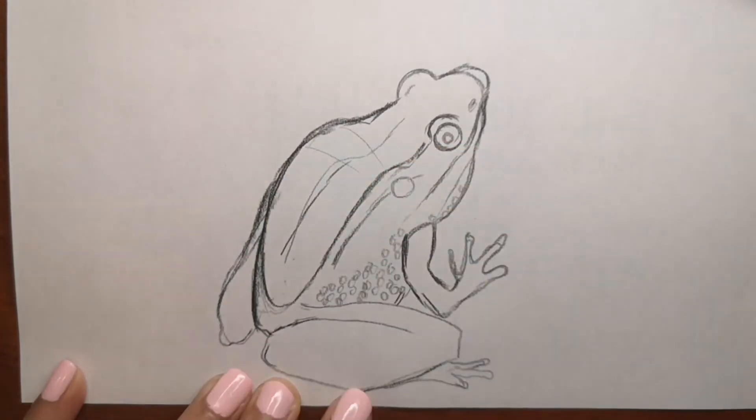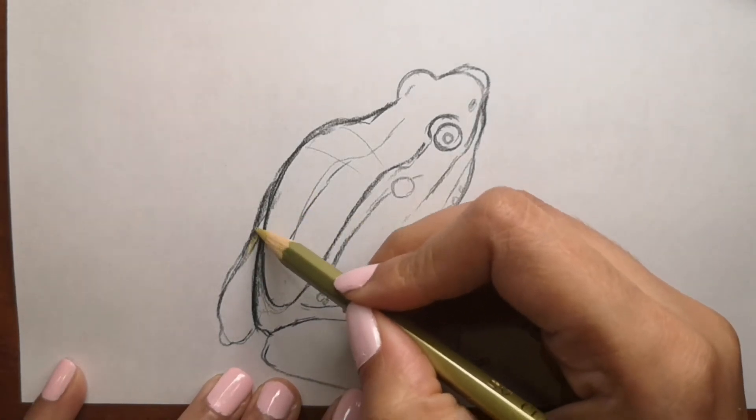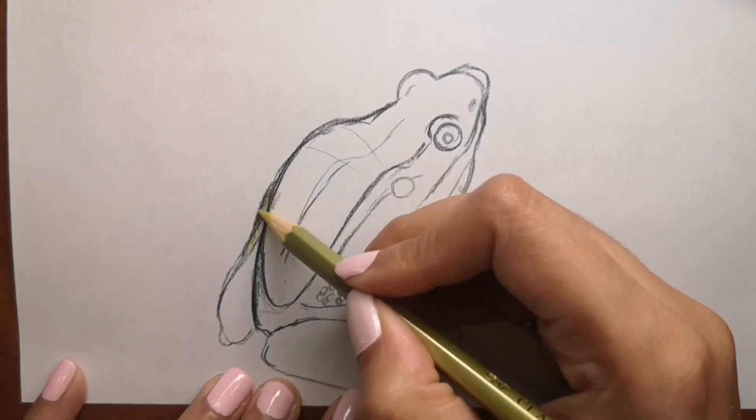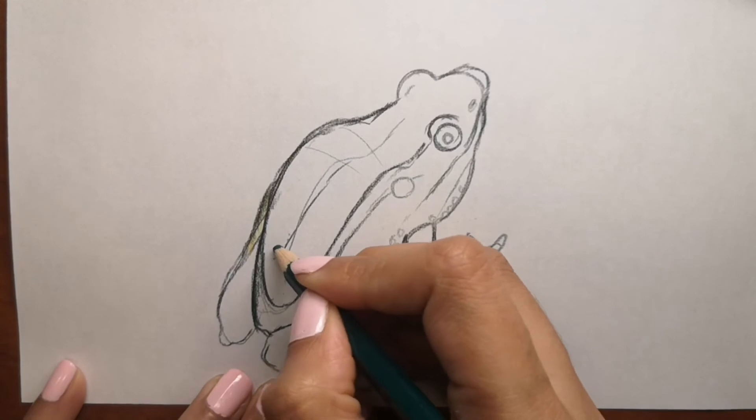They can molt—this is a process where they shed their skin. Most frogs molt once a week, but some will do it every day. Once the old skin has been pulled off, the frog usually eats it. It's disgusting—they eat their own skin.